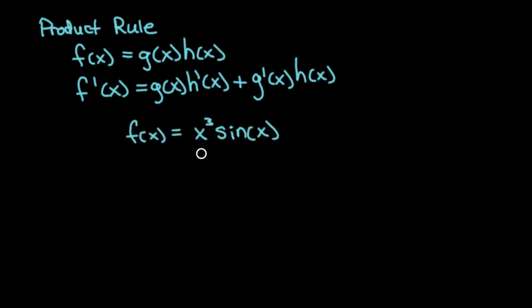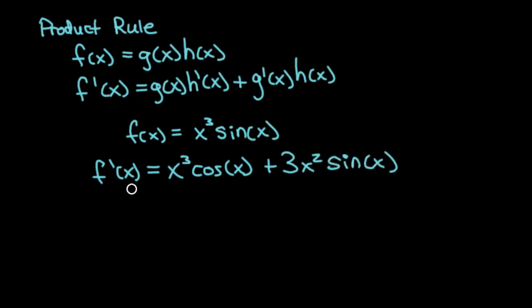So here are two functions. We got x to the third here times another function, sine of x. So f'(x) would just be: leave x to the third alone, take the derivative of sine of x, which is just cosine of x, like we talked about, plus g'(x). So take the derivative of x to the third now. We'll get 3x squared times h(x), which is just sine of x. Bam. Derivative.